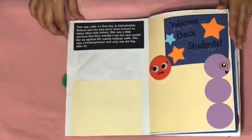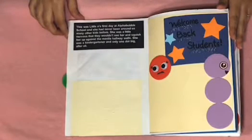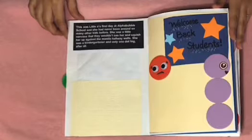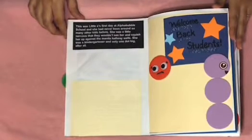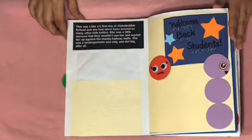She was a little nervous that they wouldn't see her and squish her up against the manila hallway walls. She was a kindergartener and only one dot big after all. Here we have Little A standing to the left of a welcome back student sign with orange and blue stars. She looks nervous. And we have letter L walking by.